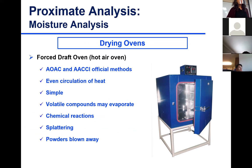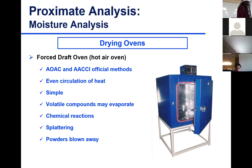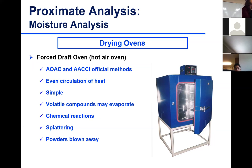It's called a forced draft oven because hot air is circulated or forced into the oven. It is an official method of analysis — you have AOAC methods and AACC International, now known as Cereals and Grains, which has official methods for utilizing the forced draft oven for many different foods. An advantage is even heat distribution, so no matter where you put your sample, you get uniform heating.